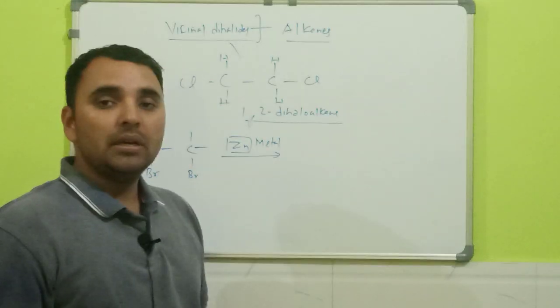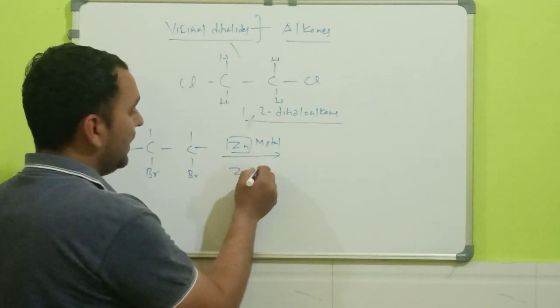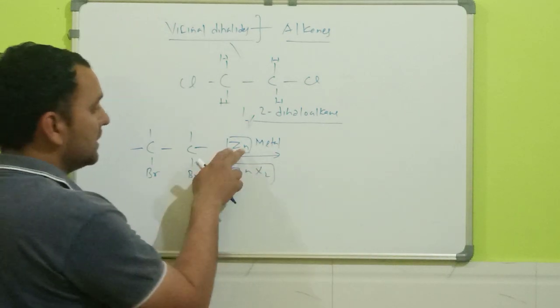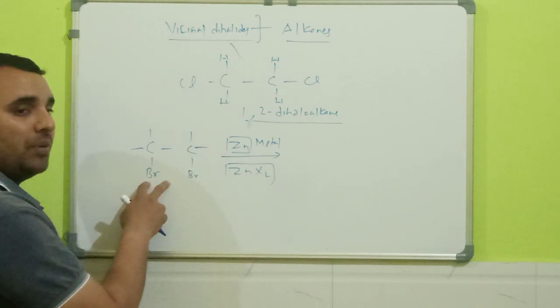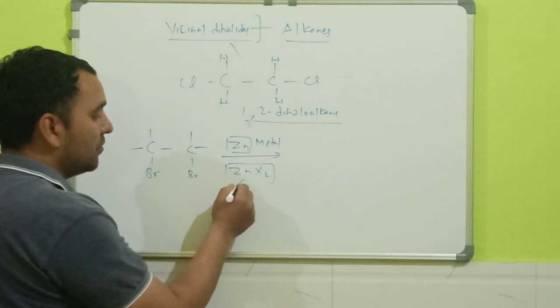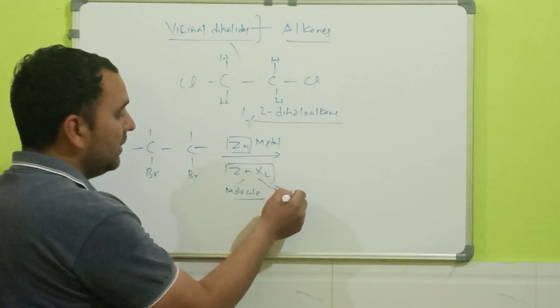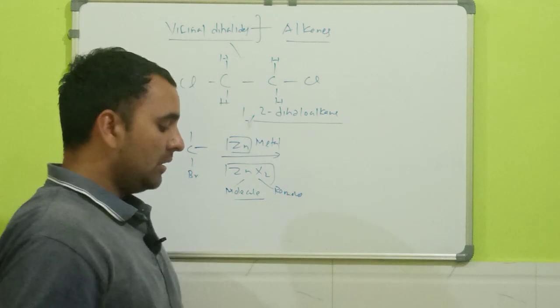When this vicinal dihalide is treated with zinc metal, the vicinal dihalide loses a molecule of ZnX2. That is, zinc will combine with these two bromine atoms and we form a molecule called ZnX2 or ZnBr2. It will be getting removed here.